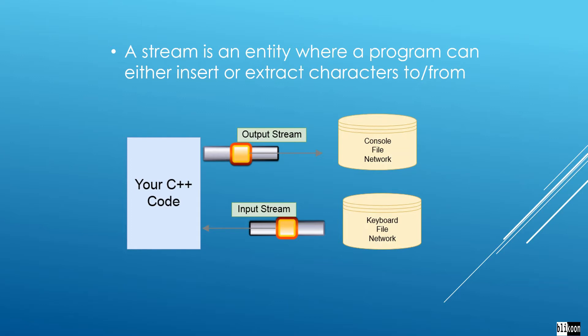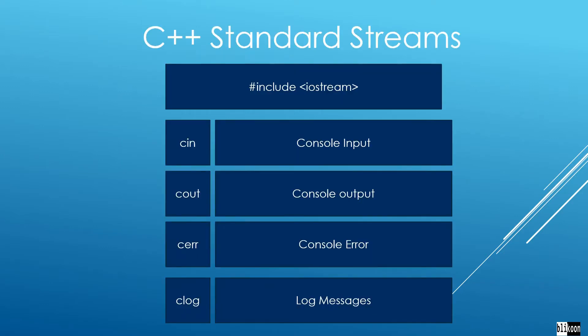Now let's look at some of the streams already available in C++ that we can use. We have cin, which is used to read things from the console. We have cout, which is used to write things out to the console — you've already seen this. We have cerr, which is used to write errors that you face in your application to the output. And we have clog, which is used to log information about your application.